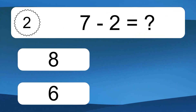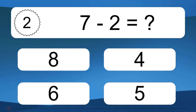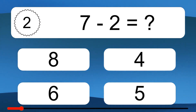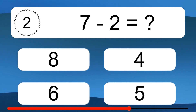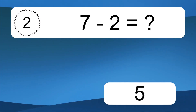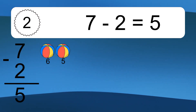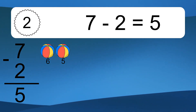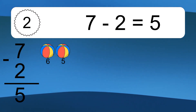7 minus 2 equals what? 7 minus 2 equals 5. Let's count it: 6, 5.